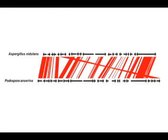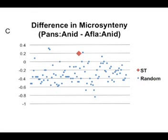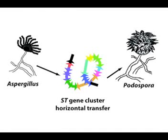Surprisingly, no other Sordariomycete genome possessed this gene cluster. Here we see the sterigmaticystin cluster region is one of very few where Aspergillus nidulans is more similar in gene order to Neurospora and Sordaria than to the corresponding region in its close relative, Aspergillus flavus. This observation raised the possibility that the Neurospora cluster originated through horizontal gene transfer from Aspergillus. These two species both lead a saprophytic lifestyle and can coexist in the same environment.